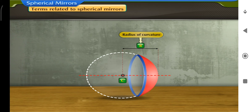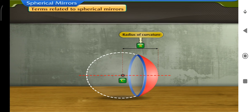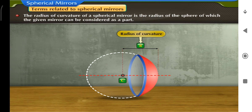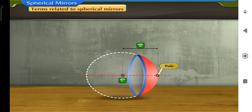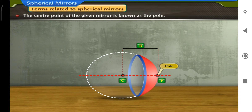The radius of curvature, abbreviated as R, is the radius of the sphere of which the given mirror can be considered as a part. The pole, abbreviated as P, is the center point of a given mirror. Here, P is the pole.